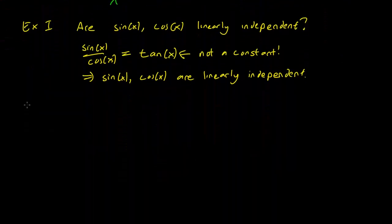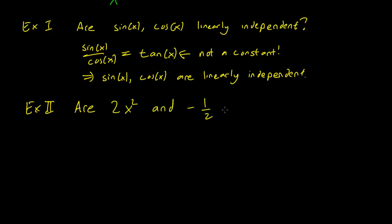Okay, here's another example. Are 2x² and -½x² linearly independent? Well, typically a very good way to check is just by dividing the two functions. So you have 2x² over -½x². You can just cancel off x² on both sides and you get -4, this is constant.